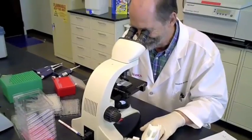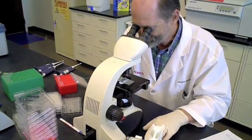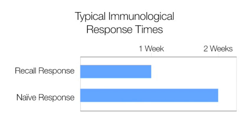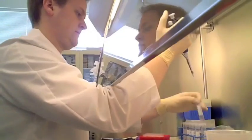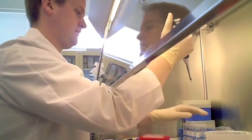We can examine both cellular and humoral immune responses to an individual. After a week for a recall immunological response, and about two weeks for a naive immunological response, we remove the immunocytes and biomolecules for analysis.